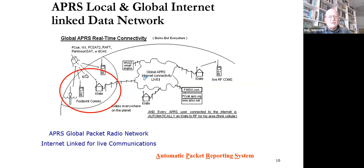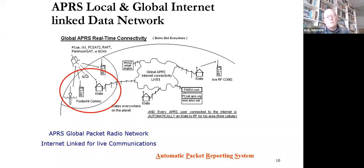APRS is basically a local VHF activity — just a couple of miles — except that somewhere in that local area there's usually someone online with their APRS equipment connected to both the radio and the internet. So absolutely everything going on in your area is transferred into the global APRS internet system, and anyone anywhere on Earth can see what's going on. Additionally, satellites fly over your local area, extending your local range from a few miles to most of the country for about five minutes.